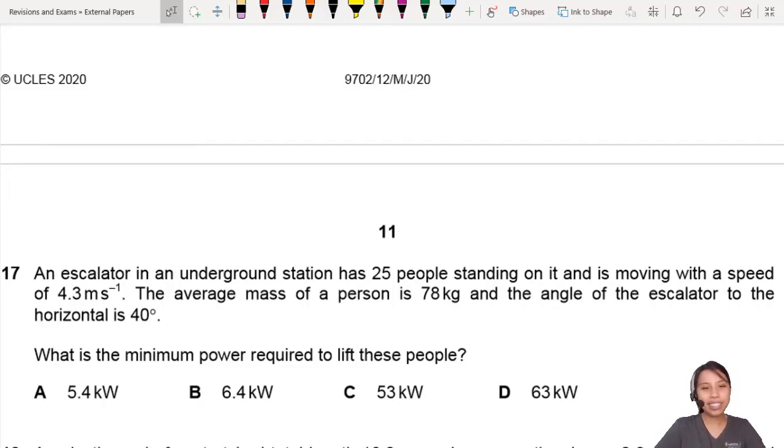We got an interesting escalator question. 25 people standing on it and moving with a speed. The average mass of a person is 78 kg and the angle is 40 degrees. What's the minimum power required to lift these people?